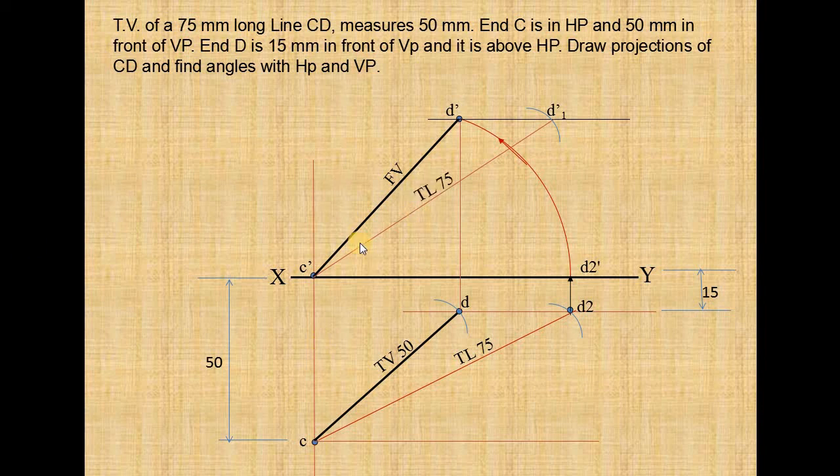Now you take this angle as theta, measure this angle theta, and this angle as phi. The true length making with the horizontal line is phi. Like this you can find the angles with HP and VP. Thank you for watching my video.